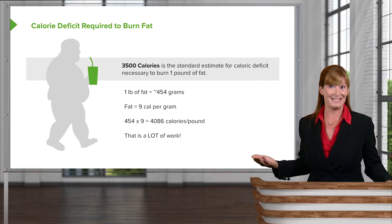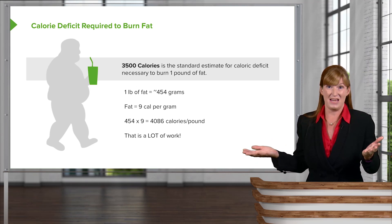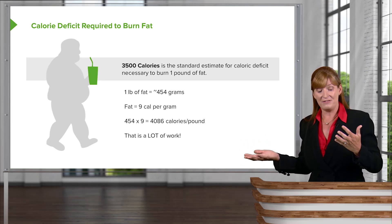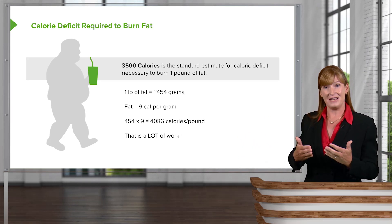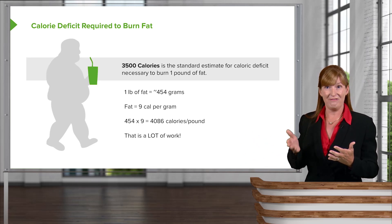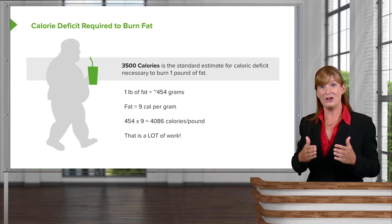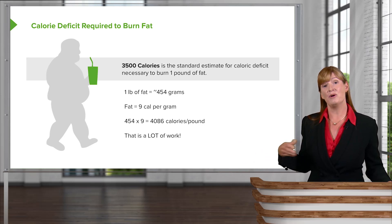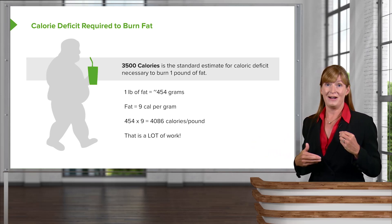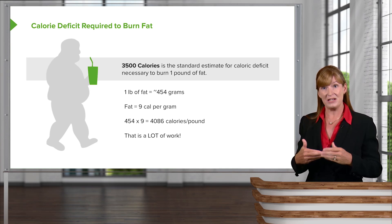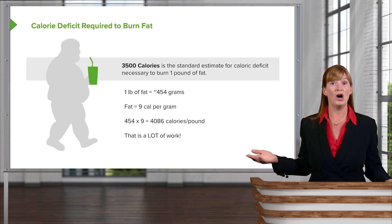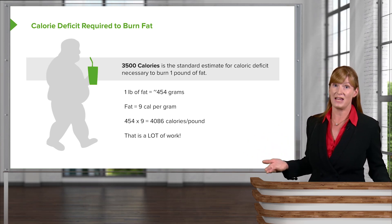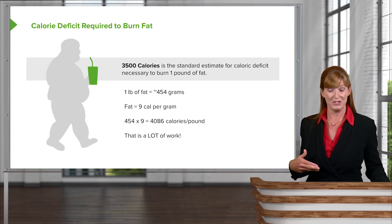At an intake of about 2,000 calories a day for an active person, we need a deficit of about 500 calories per day to lose one pound of fat in about a week. This is a number to keep in mind so that you can counsel patients and make realistic predictions about how long it's going to take to lose weight.